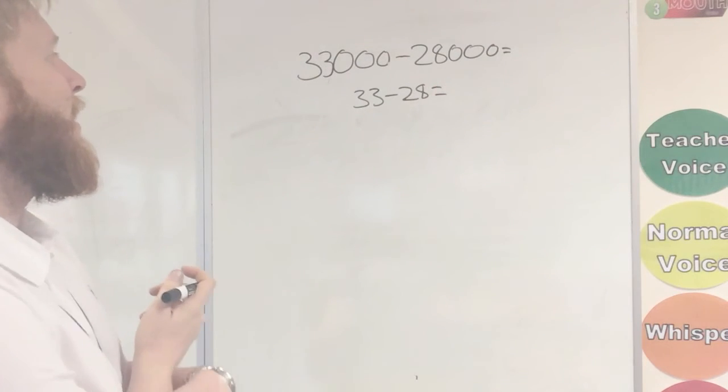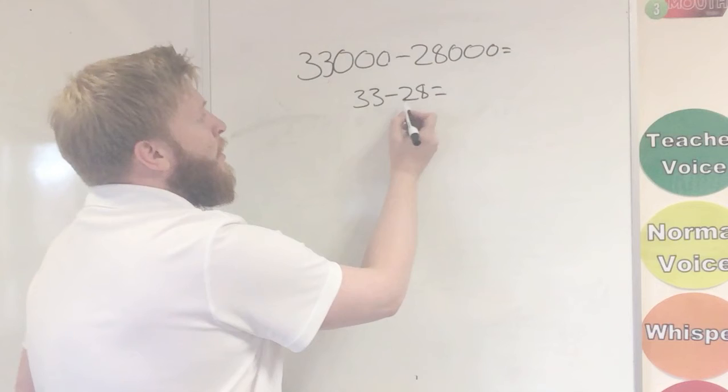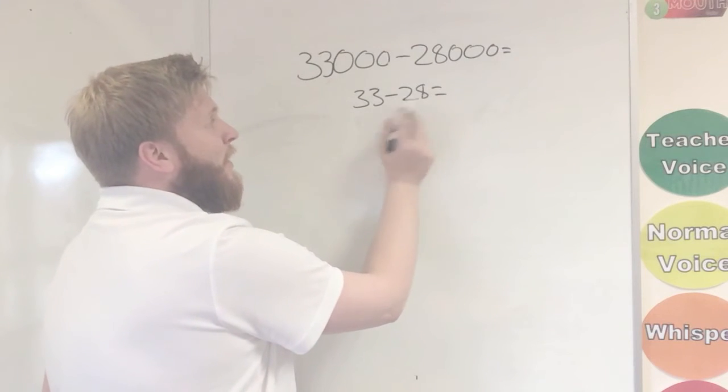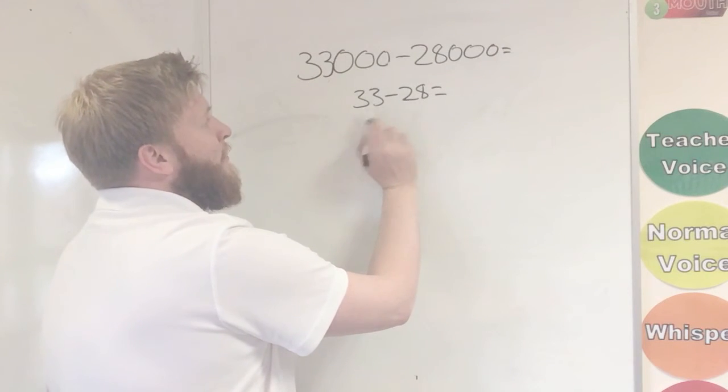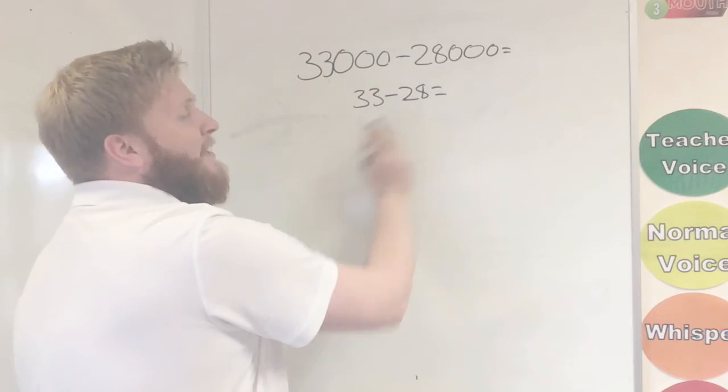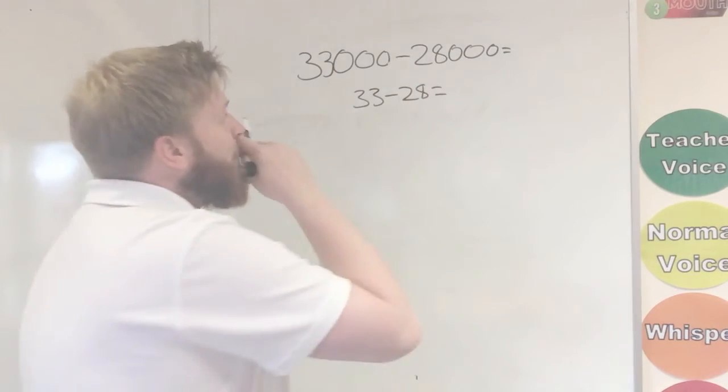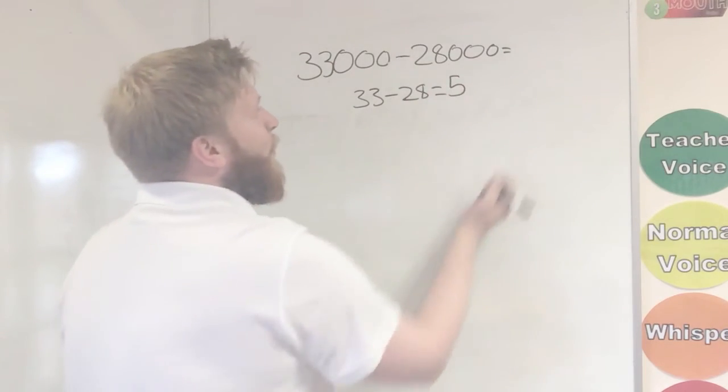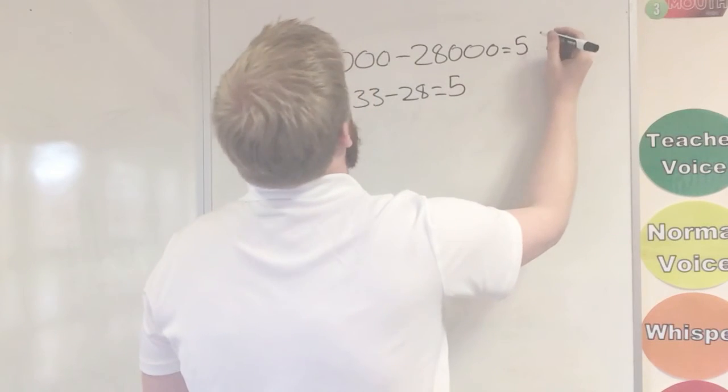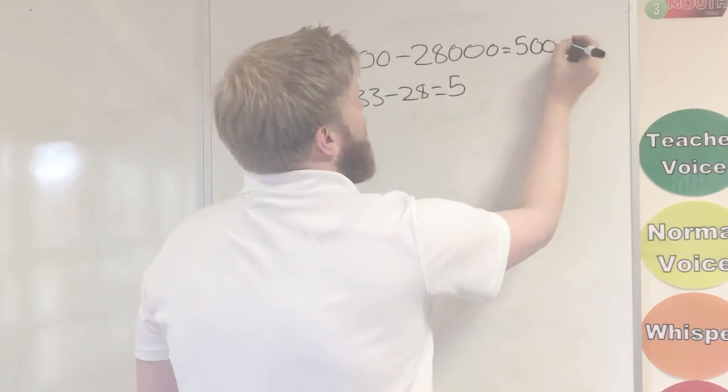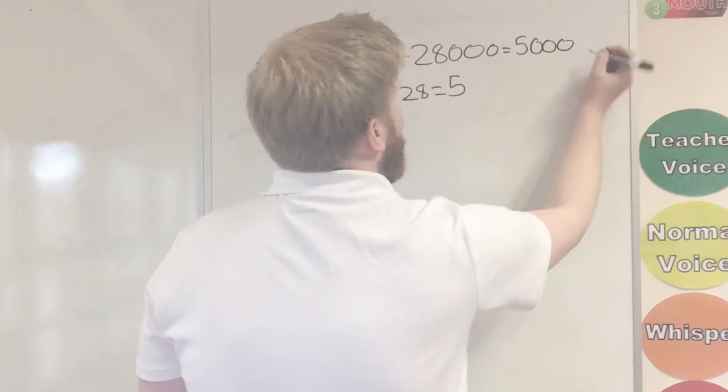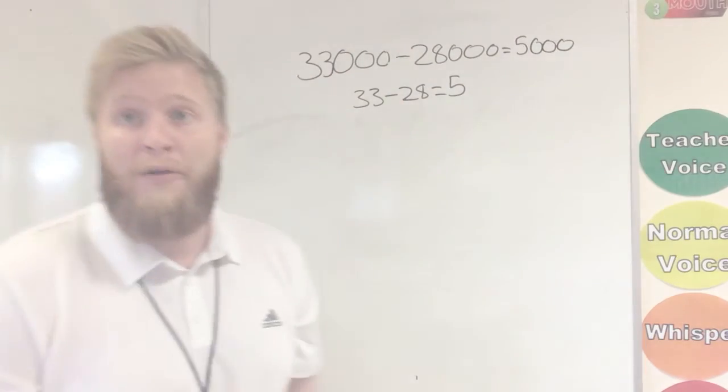So we can work that out, and we will get that our answer is, I'm going to work this way. 3, take away 2 is 1, so I've got 13, take away 8 now. 13, take away 8 is 5. So I'll put my answer as 5, and then add my three zeros back on. So we've got the answer there of 5,000.